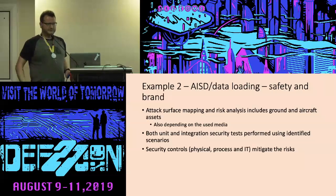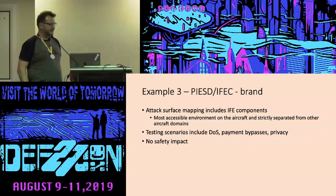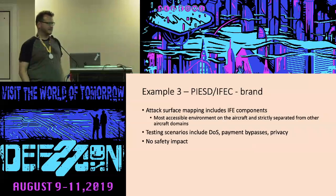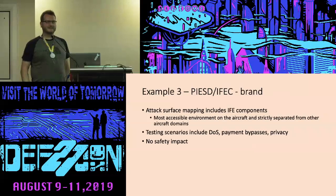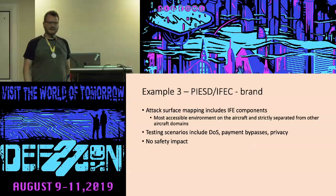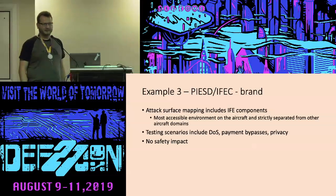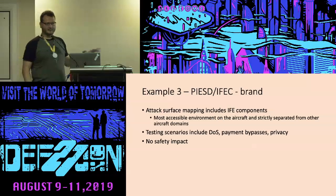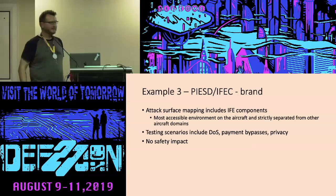Our last example is probably the easiest to imagine: an aircraft with in-flight entertainment and connectivity — your little screens and Wi-Fi on board during flight. These are the main things that reach the media when there is any vulnerability or even just some miscommunication. They have the most exposure when it comes to the general passengers.